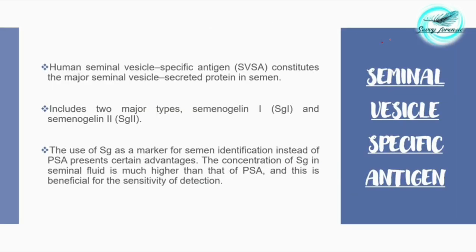There is a third constituent called seminal vesicle specific antigen (SVSA). Human seminal vesicle specific antigen constitutes the major seminal vesicle secreted protein in semen. It includes two major types: semenogelin-1 and semenogelin-2, both involved in the gel formation of semen's jelly texture.